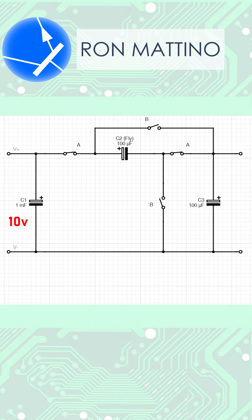Let's say input voltage is 10V, C1 capacitance is 1000uF, C2 and C3 both have capacitance of 100uF.